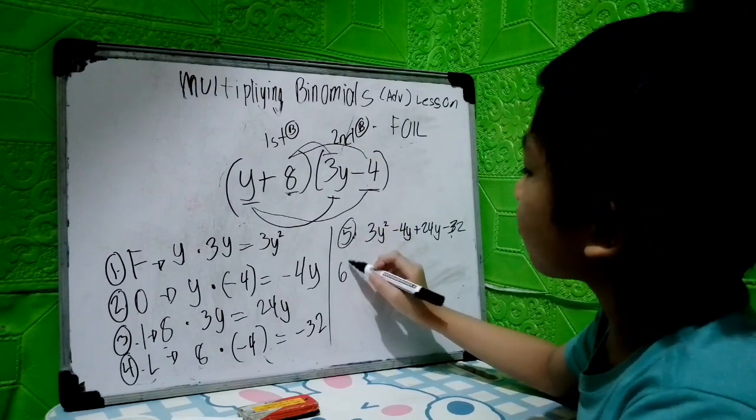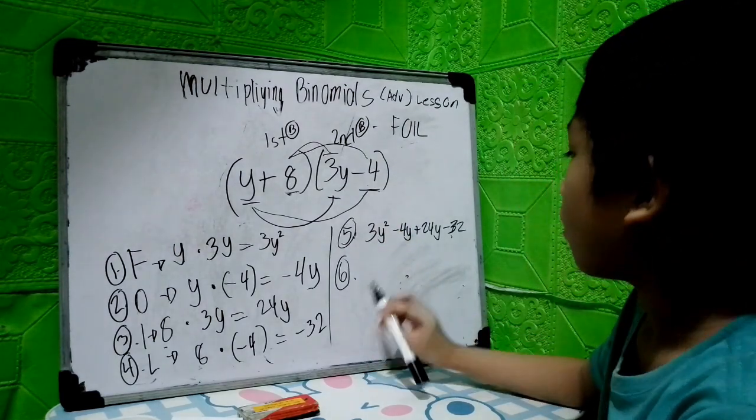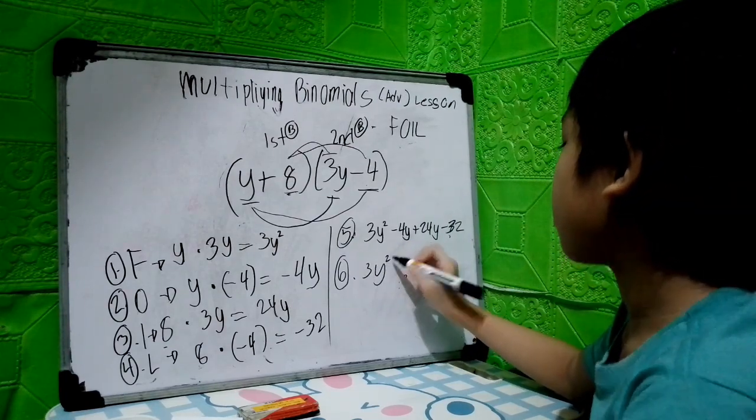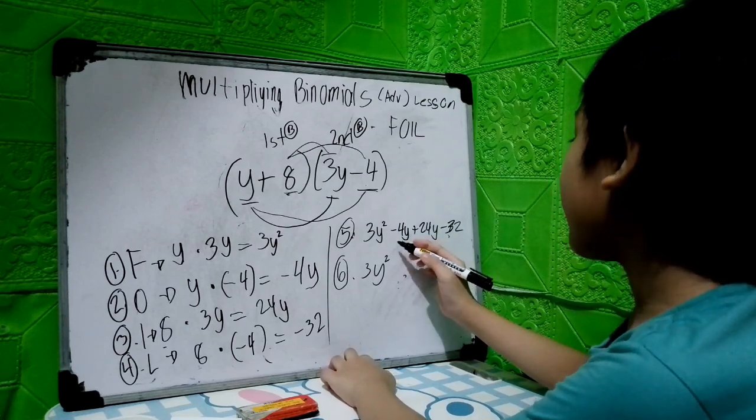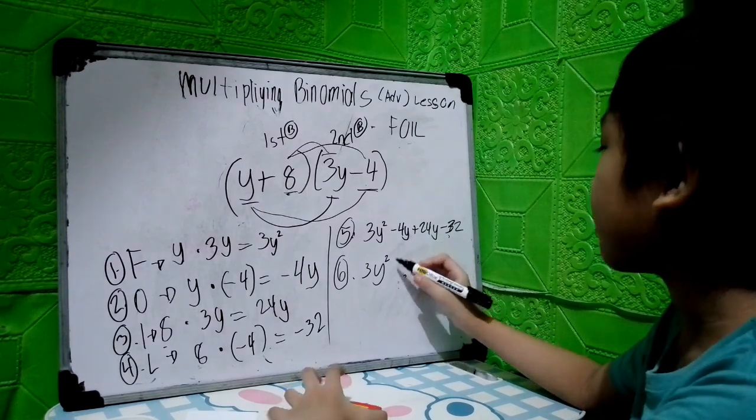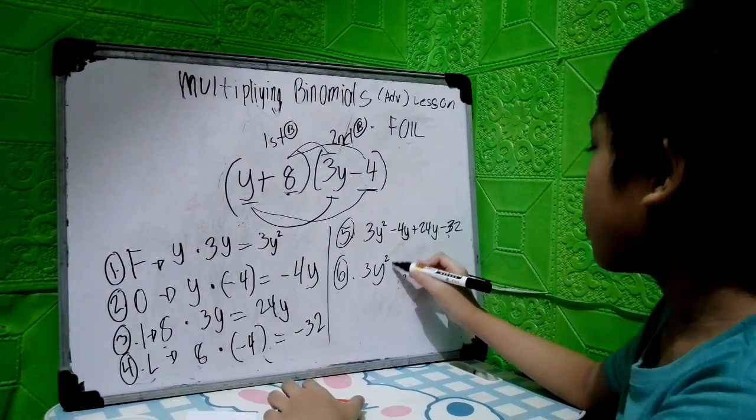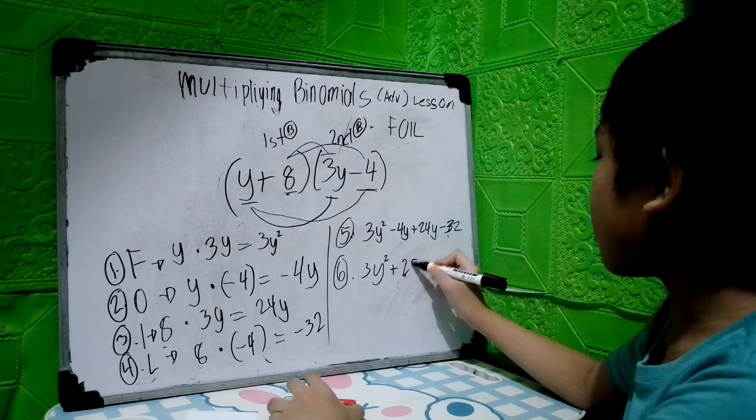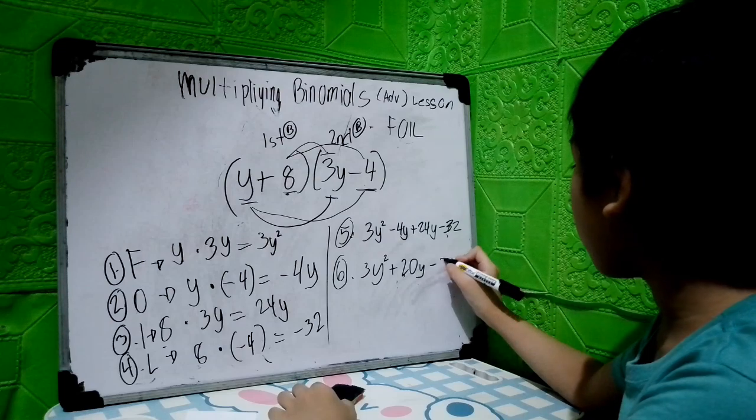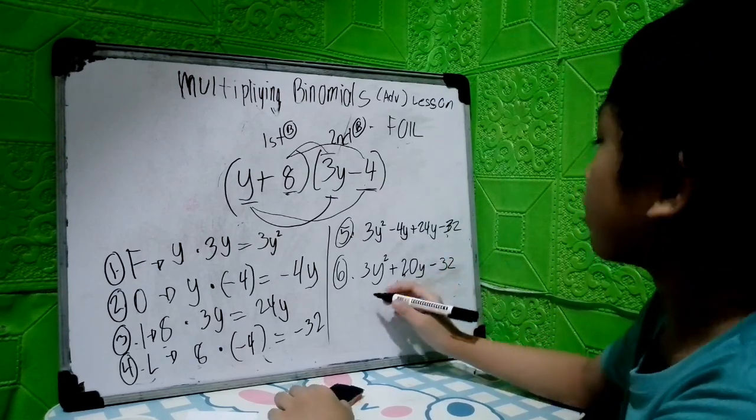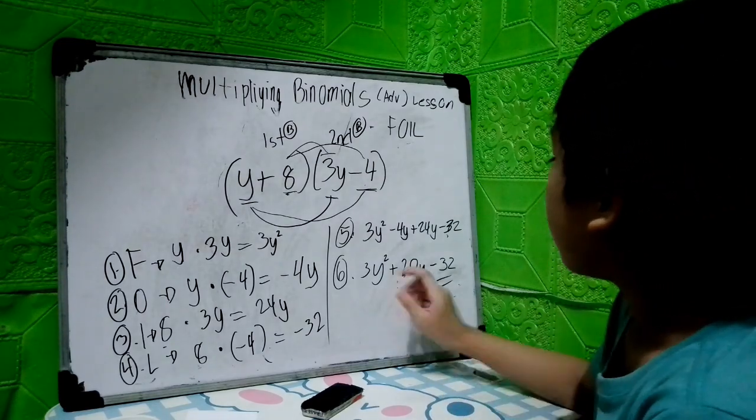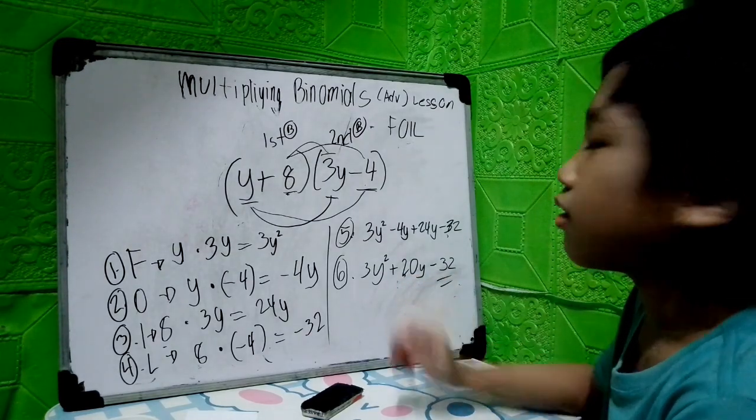Now, the next step is to simplify. 3y squared has no similar term, so we will just copy that. Negative 4y plus 24y is similar because they have the same power and the same variable. So positive 20y. And no similar term for negative 32, so we will just copy that. Your final answer is 3y squared plus 20y minus 32.